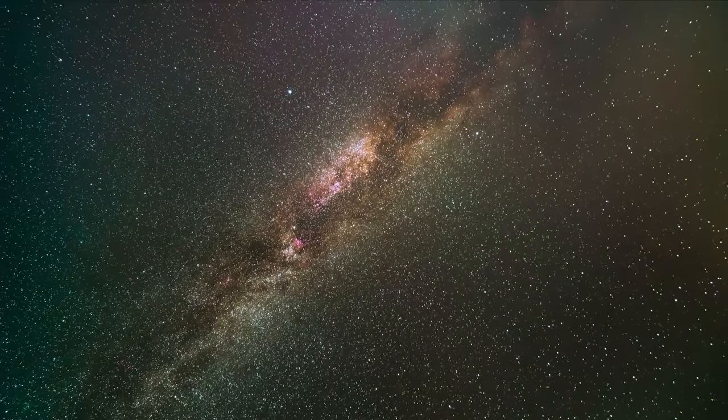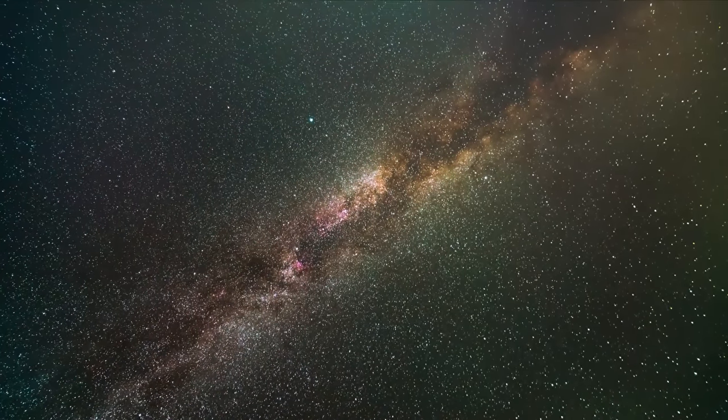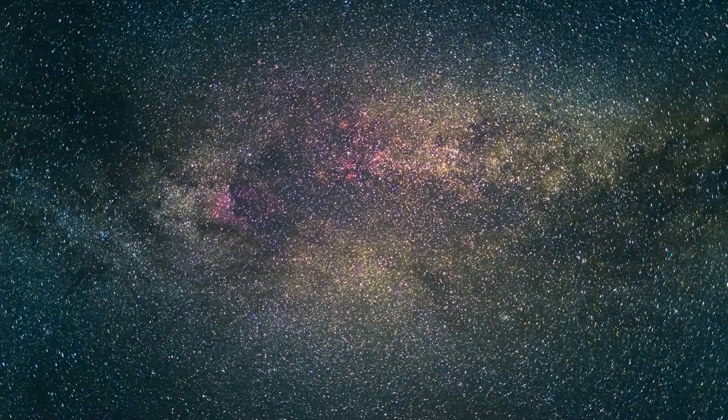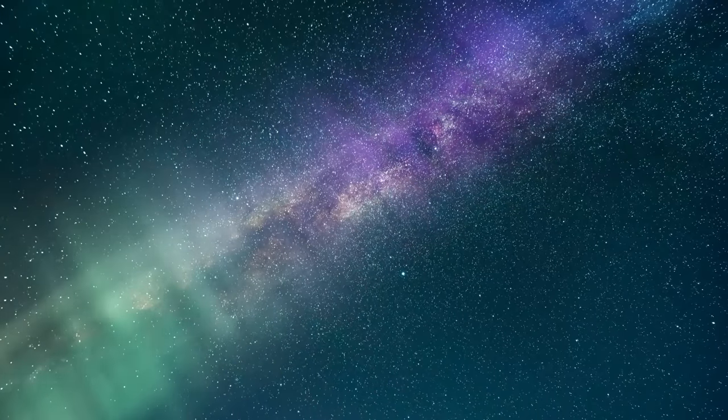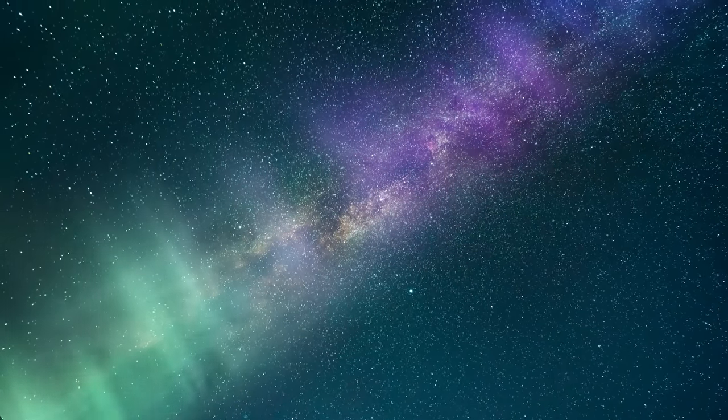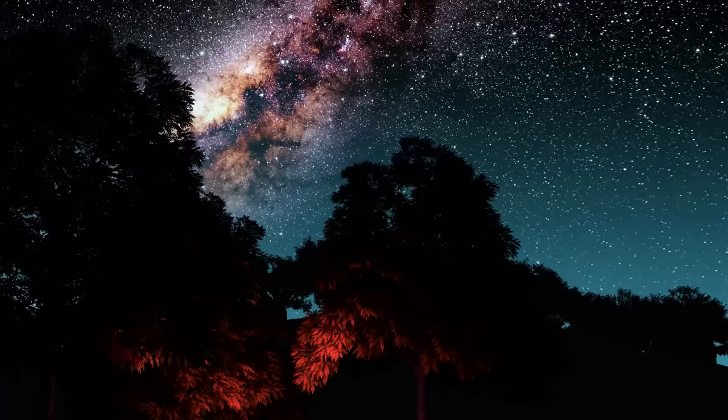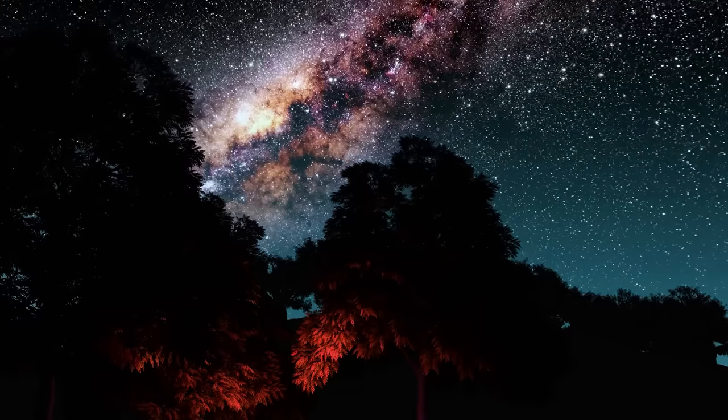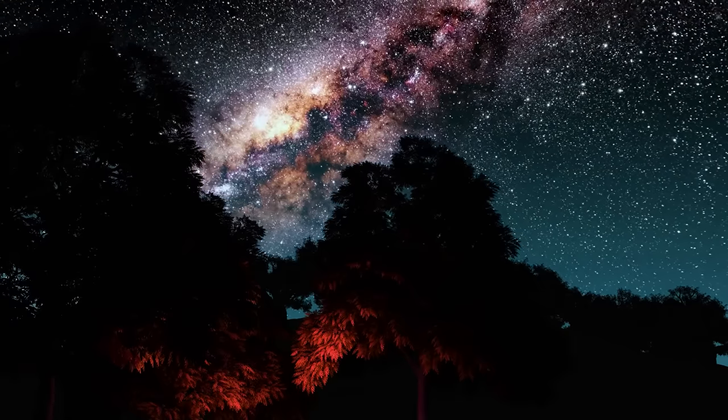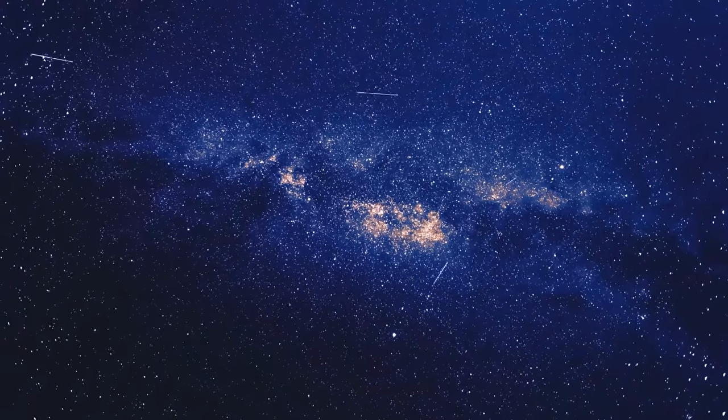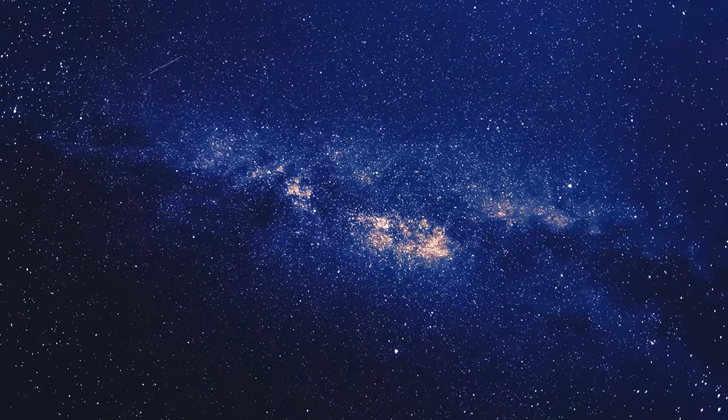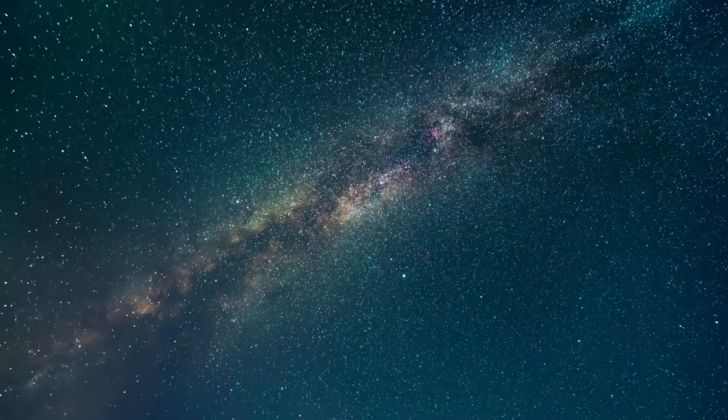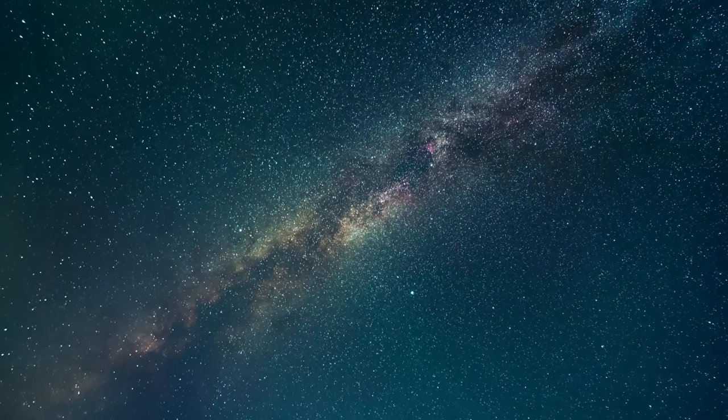In the tapestry of the universe, there are threads that we can see and touch, like stars, planets, and galaxies. And then there are threads that remain invisible and intangible, yet they weave the cosmos together in ways we're just beginning to understand. One such thread is dark matter. Dark matter is aptly named, primarily because it doesn't emit, absorb, or reflect light. Unlike the stars that twinkle in the night or the planets that reflect sunlight, dark matter remains invisible. So how do we even know it exists if we can't see it? The answer lies in its gravitational influence on the things we can observe.